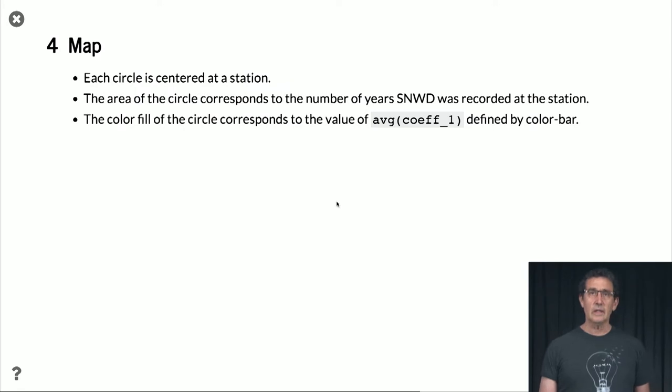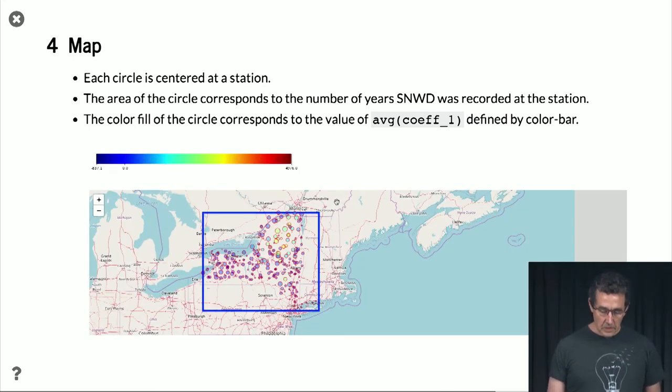So, now we can take that information and create a map. This is the map. And as you see, the square surrounds the state of New York.